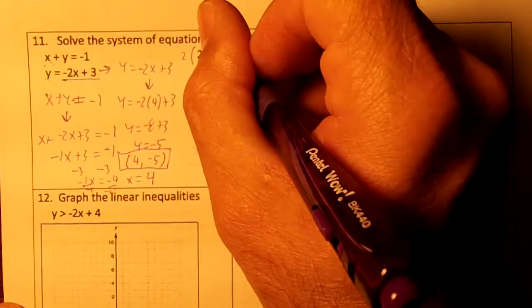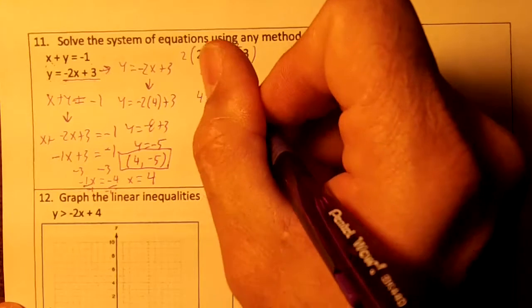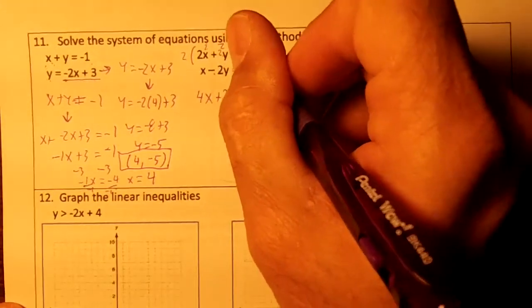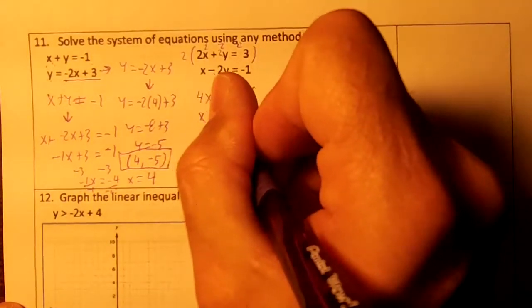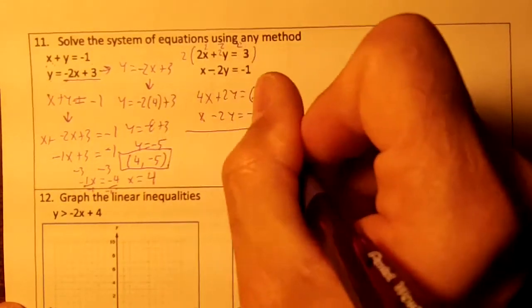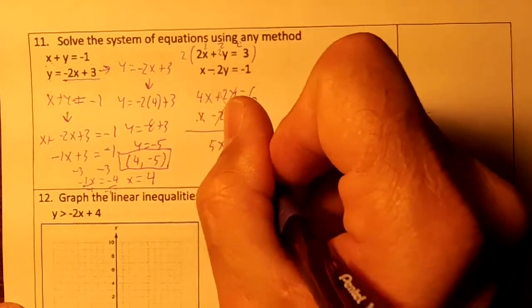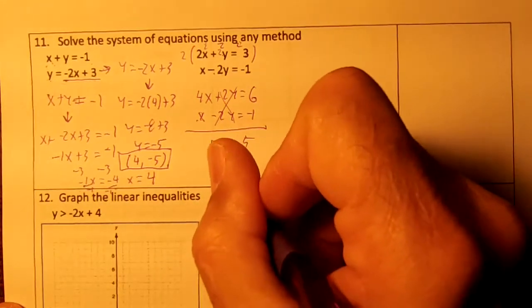2 times 2x is 4x, plus 2 times y is 2y, equals 2 times 3 is 6. Make sure you multiply the constant by the 2. Then write down the next equation, don't change it. The y's will eliminate. 4x plus 1x is 5x, 6 minus 1 is 5, divide by 5, you get x equals 1.